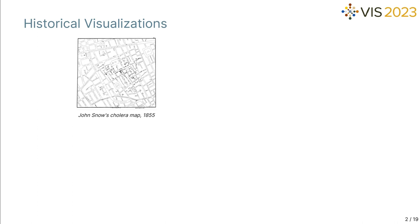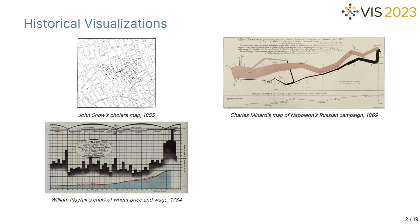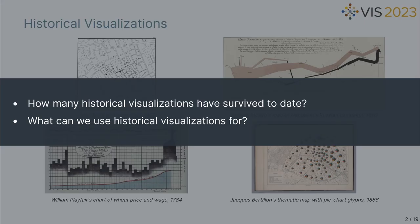Visualization has a long history. There are many famous visualizations created hundreds of years ago, such as Jon Snow's cholera map, Charles Minor's map of Napoleon's Russian campaign, William Playfield's chart of wheat price and wage, and Jack Bertillon's symmetry map with pie chart glyphs. We refer to these visualizations created before the computer era as historical visualizations.